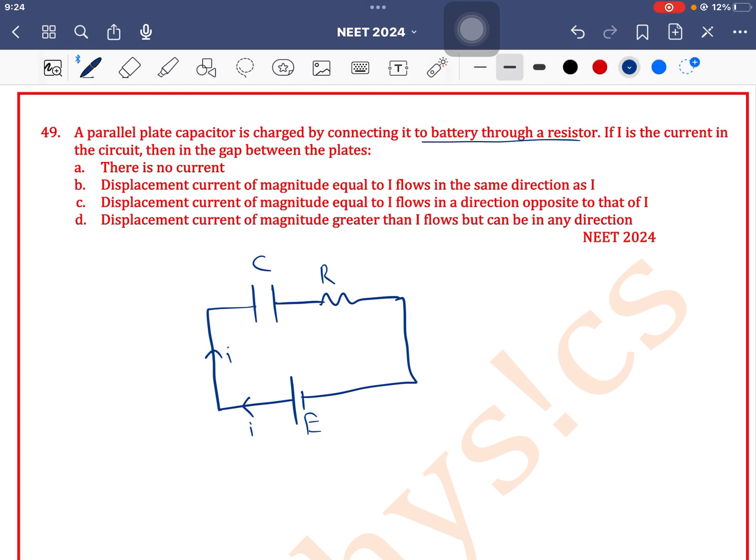This is a theoretical question. We know that whenever a capacitor is in charging mode, the main current is called conduction current, and the current between the two plates of a capacitor is called displacement current.